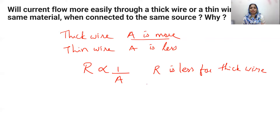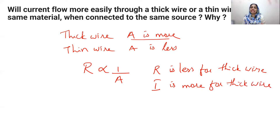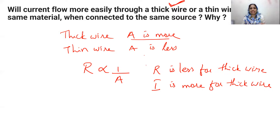Resistance is less for a thick wire, which means current is more for a thick wire. Current will flow more easily through a thick wire, as resistance is inversely proportional to area — a thick wire offers less resistance and hence current flows more easily through it.